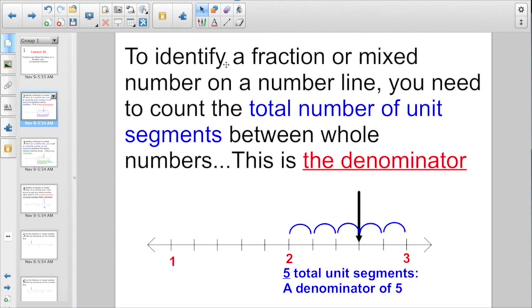To identify a fraction or a mixed number on a number line, you're going to need to count the total number of unit segments between the whole numbers. That's going to be your denominator. So here, if I have an arrow that you need to identify, you better figure out how many unit segments there are between the whole number on the left, which is 2, and the whole number on the right, which in this case is 3. There are 5 total unit segments, right?